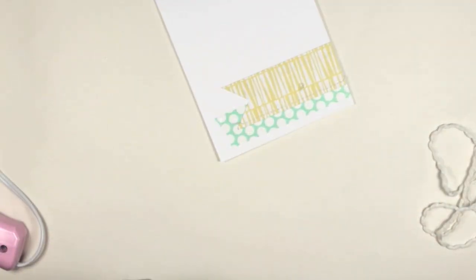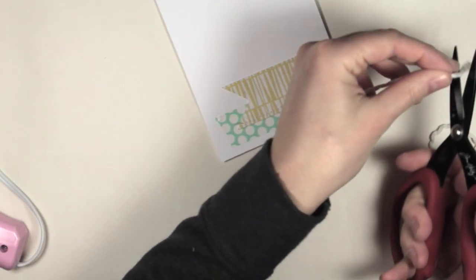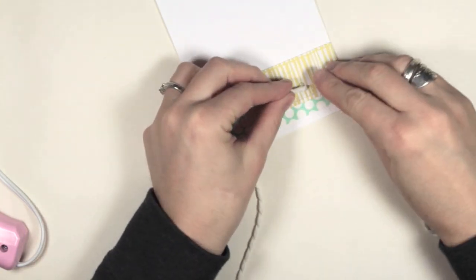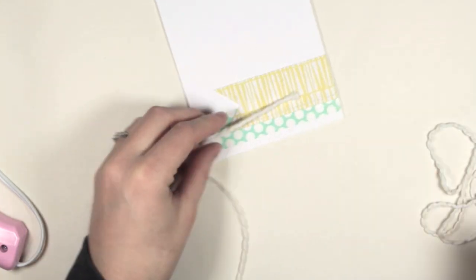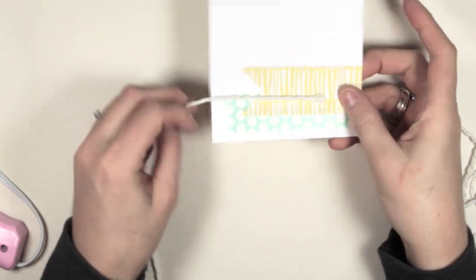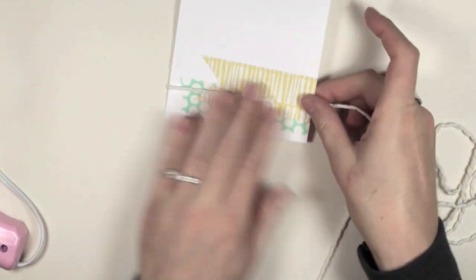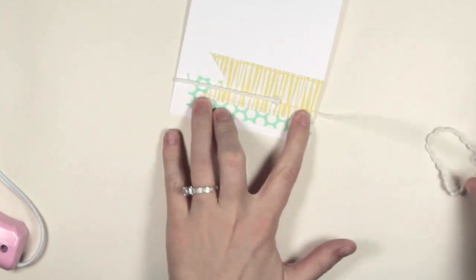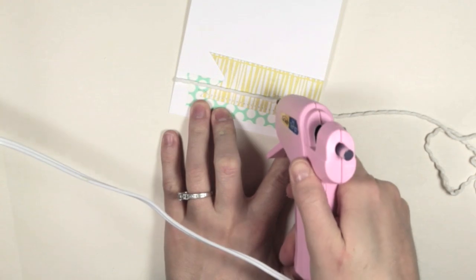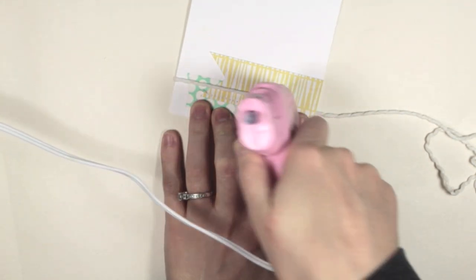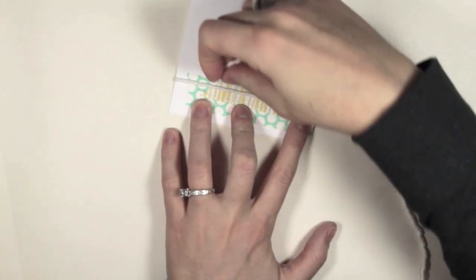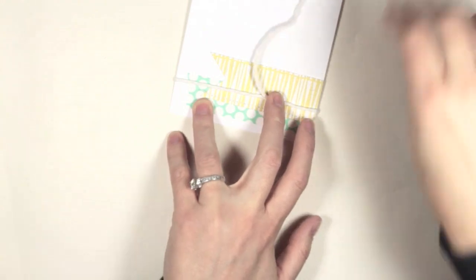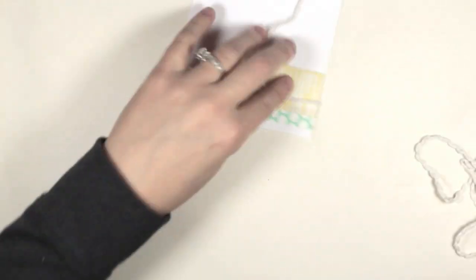I'll adhere that in place, wrap the string around, then place another dot of glue to adhere the other edge. I'll just trim that down.